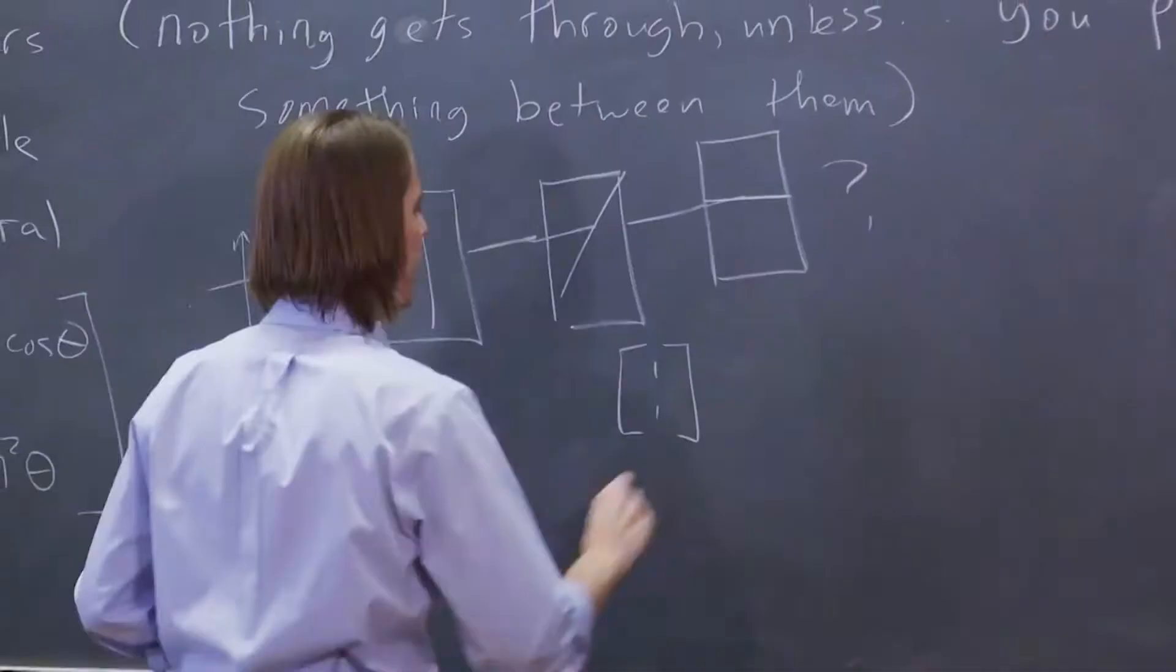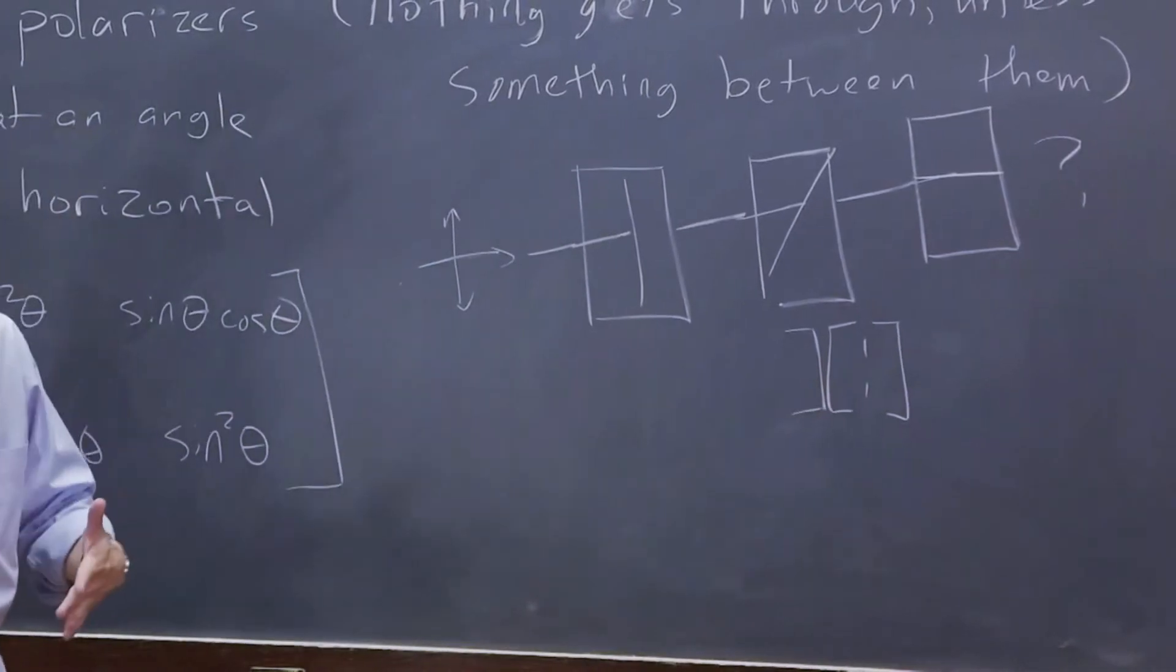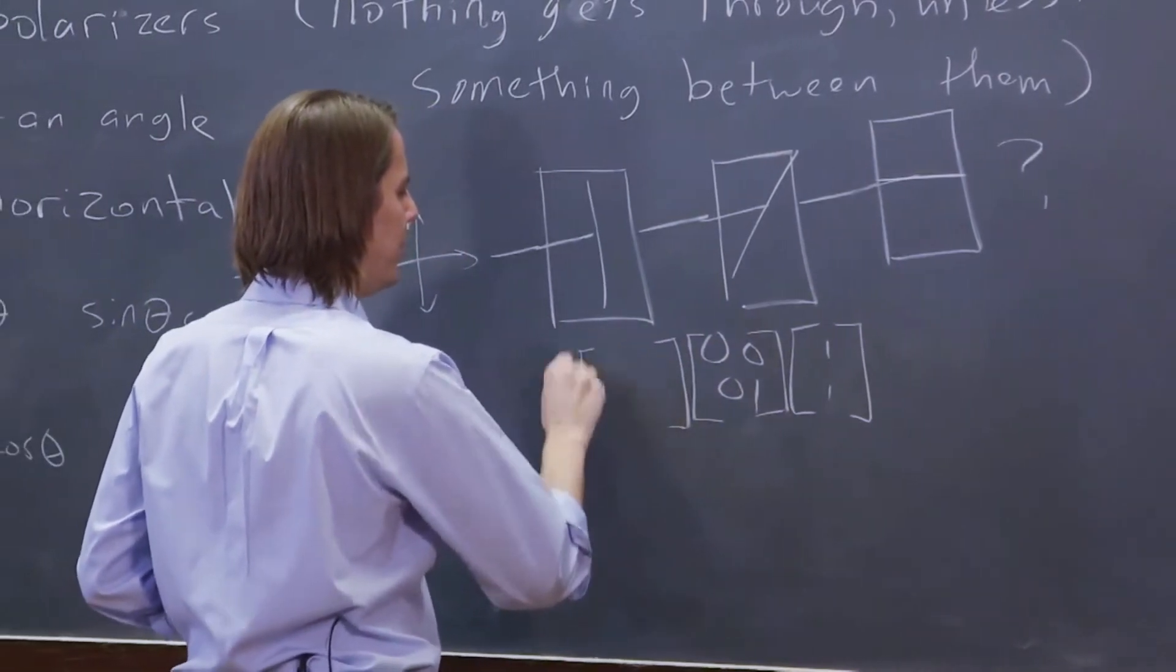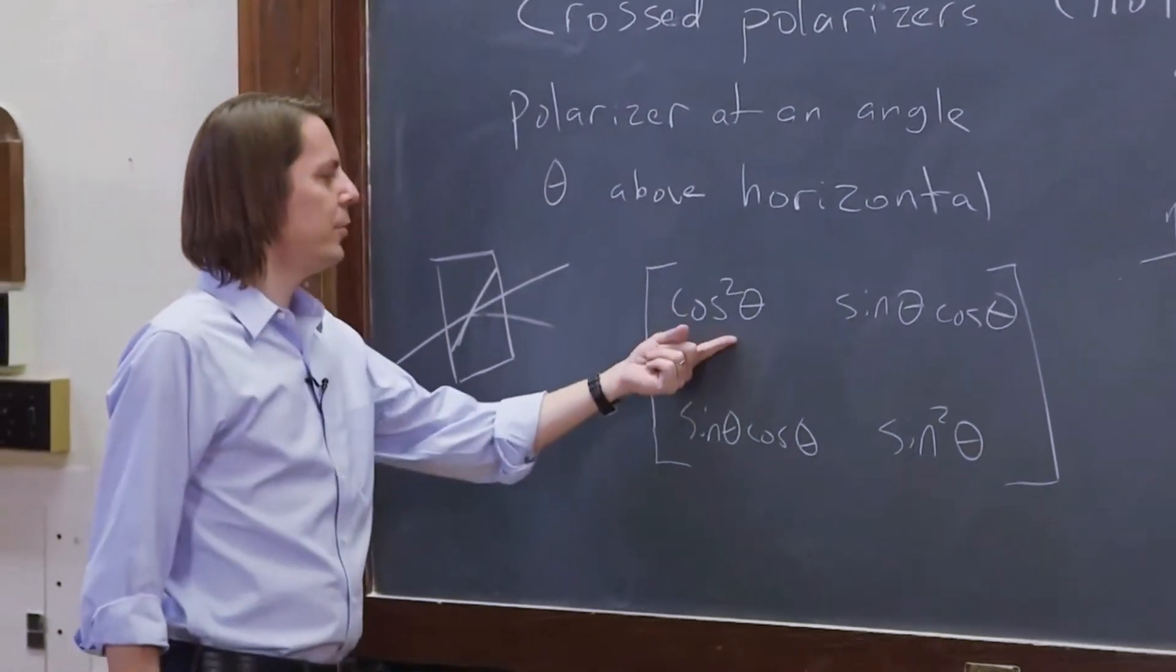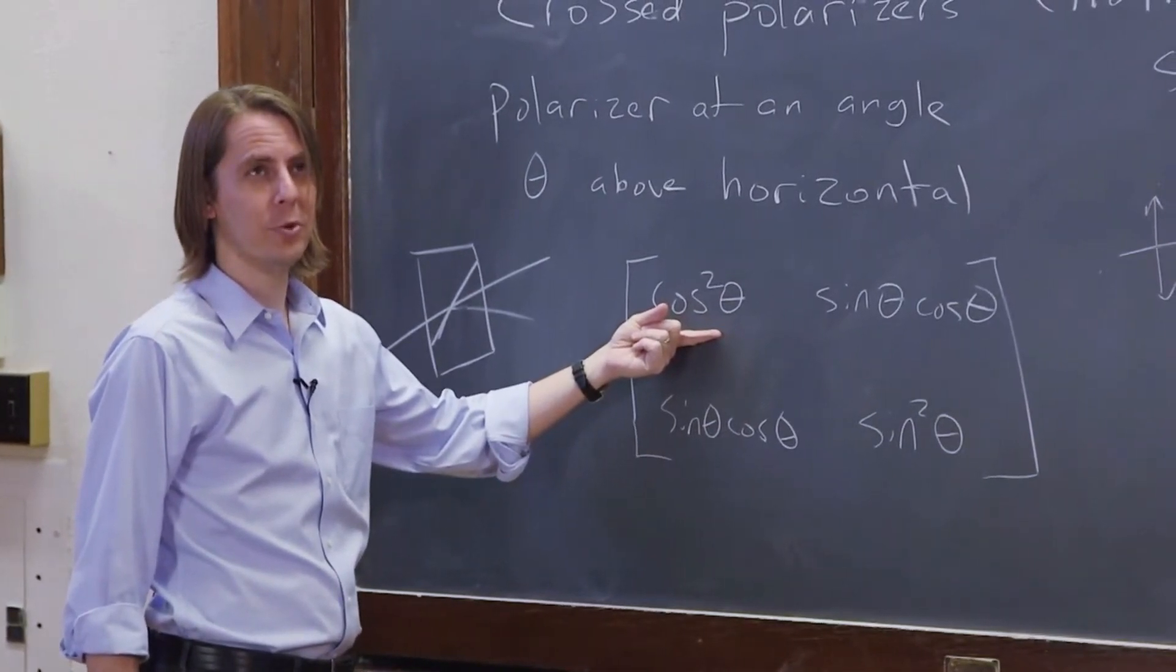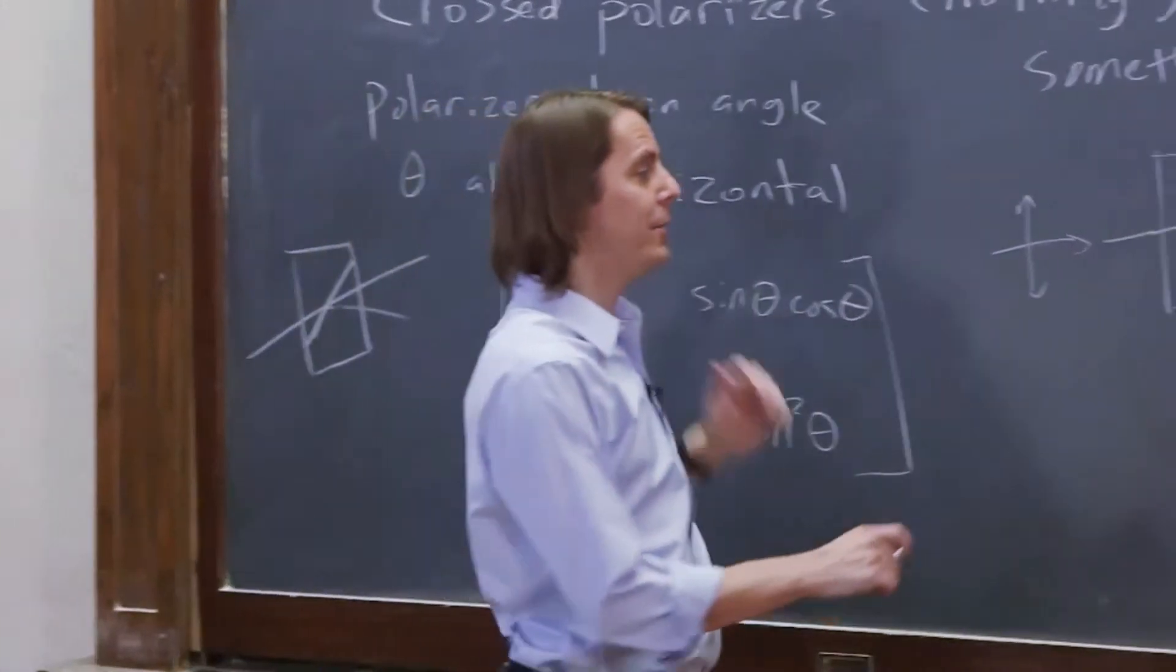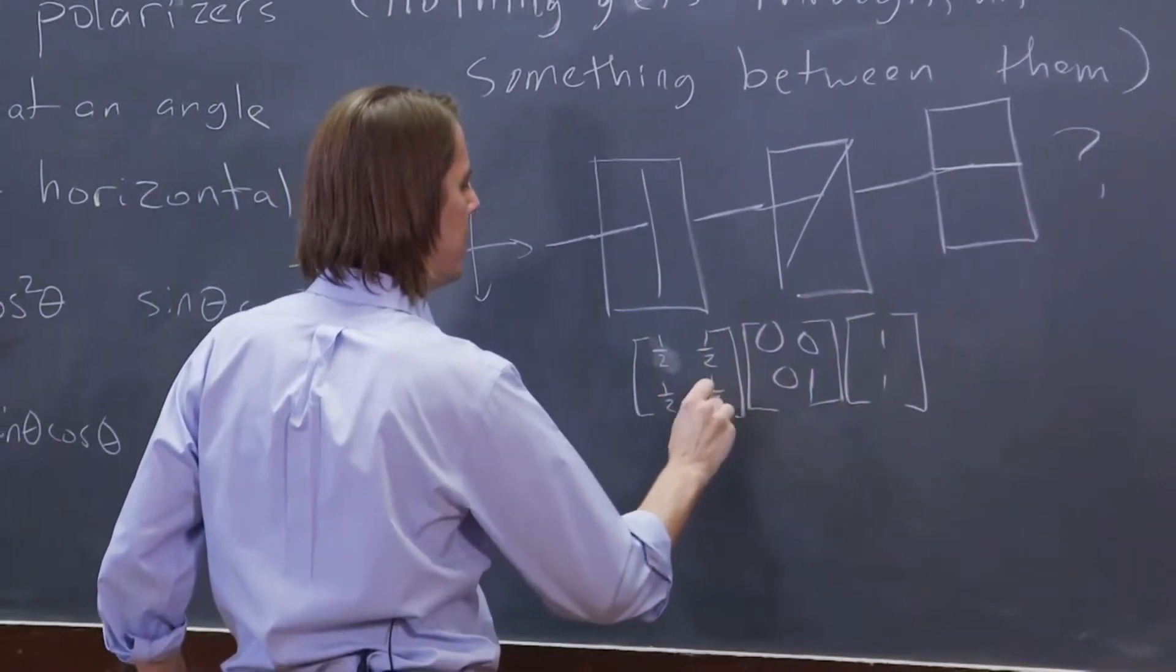So we have 1, 1. That's the input light. And then it went through a vertical polarizer, 0, 0, 0, 1. And then it went through that polarizer, and I held it at 45 degrees. Let's do the case of 45 degrees. Cosine squared of 45 degrees is a half. Square root of 2 over 2 times square root of 2 over 2 is 2 over 4. Half, half, half, half. So at 45 degrees, the matrix is just four halves. Half, half, half, half.